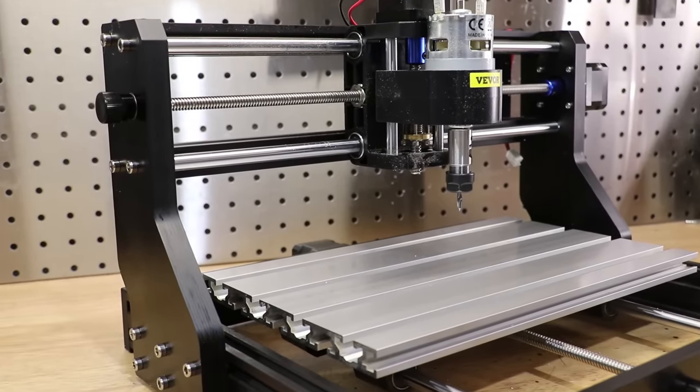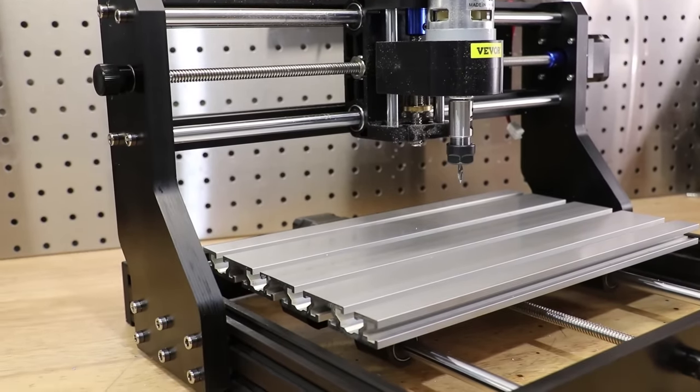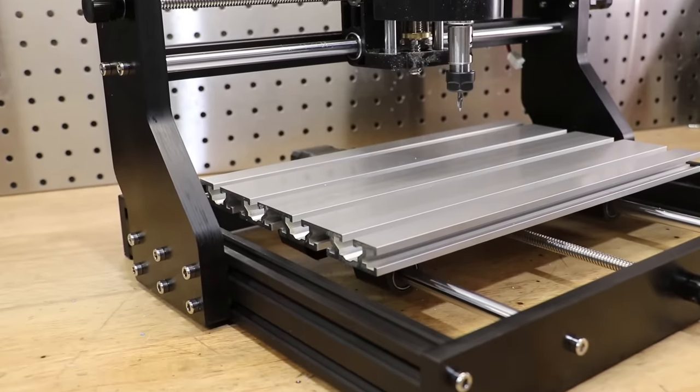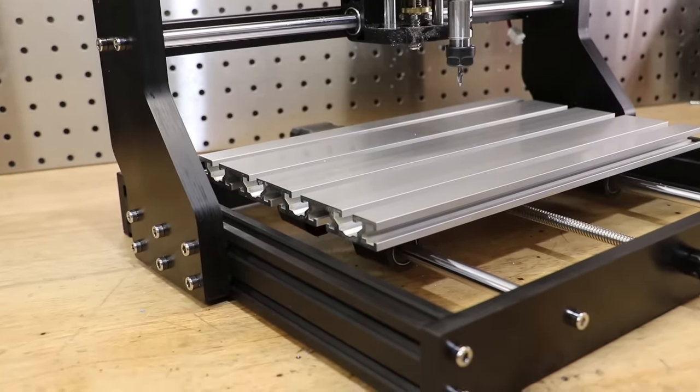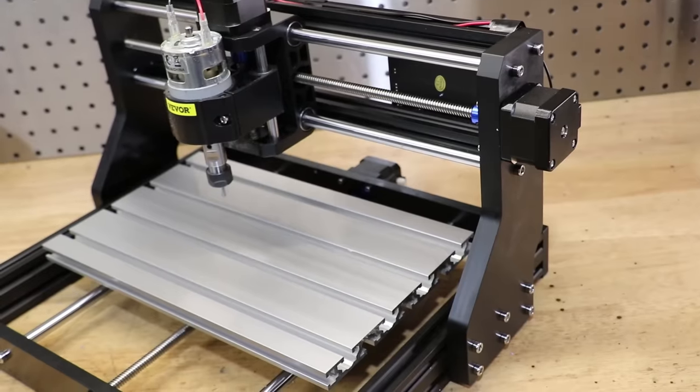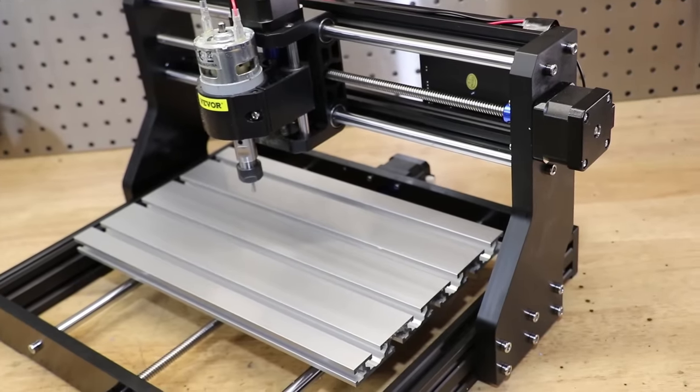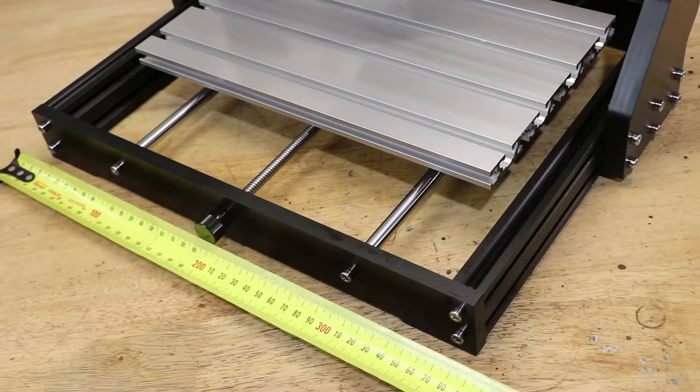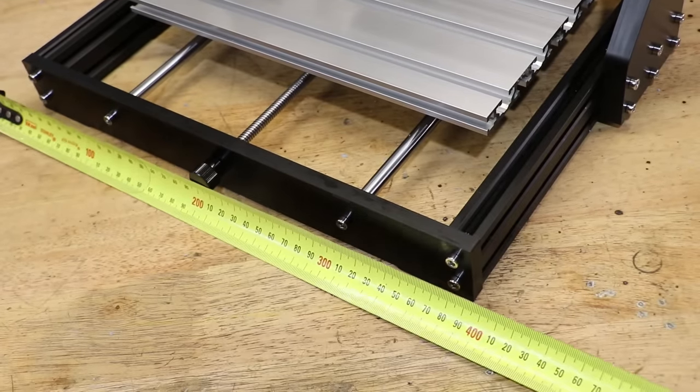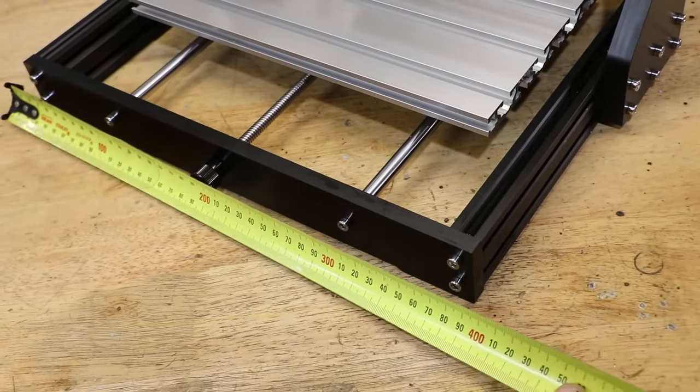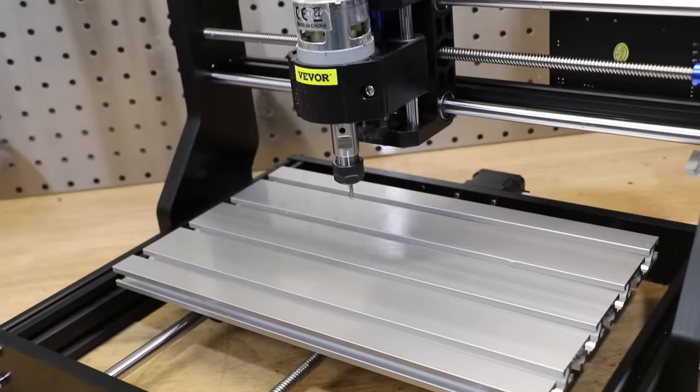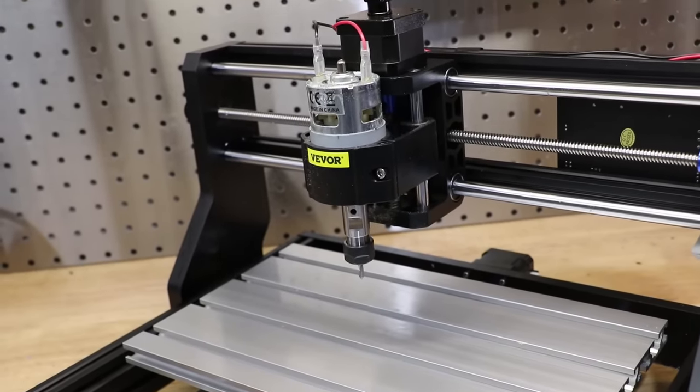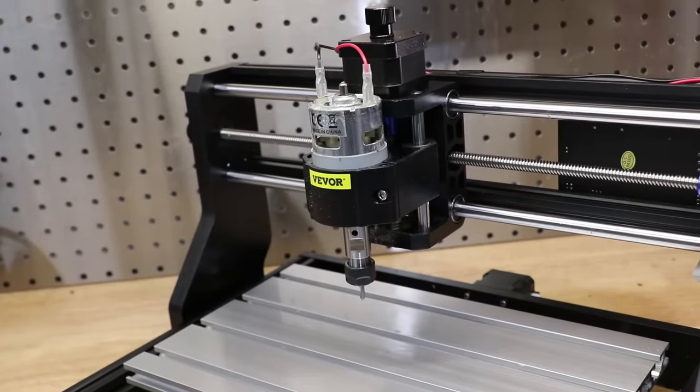This is the CNC 3018 Pro - 3018 being the X and Y cutting area of 30 centimeters by 18 centimeters. Frankly this is a pretty big cutting area considering the overall size of the machine. Measuring it, it comes out to being about 400 mils wide by 330 mils deep by 220 mils high. For what I paid I'm pretty surprised with how big it actually is.